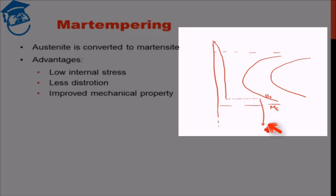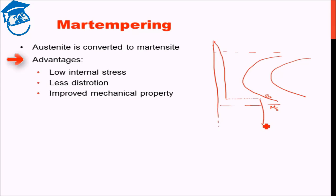What is the advantage of this compared to hardening process? The advantage is once we reach this temperature and give it sufficient time before formation of martensite, what will happen is that the whole body acquires this temperature. If the body is large, even in that case, uniform temperature is achieved throughout the body and thereby when we quench it, we get low internal stress, less distortion and as a result improved mechanical property.